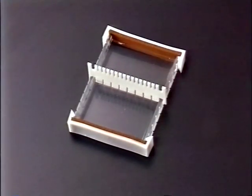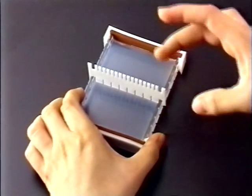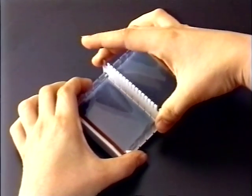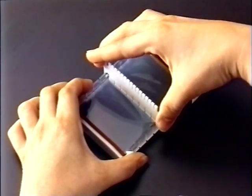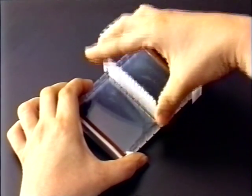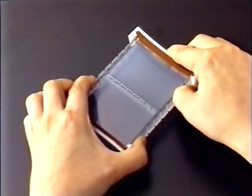Allow the agarose to solidify for approximately 20 to 30 minutes. The agarose gel will turn from clear to opaque when it has solidified. Gently remove the comb from the gel. Remove the end dams from the gel casting tray.